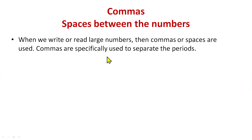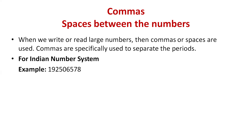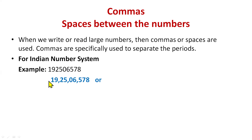We have already done the Indian place value chart. In the Indian number system, we need to insert commas: in the Indian system, three members are in the ones house, next two in thousands, next two in lakhs, and then crores. So first we put a comma after three digits, then after every two digits. In some books, spaces are used instead of commas. You can see: ones period, thousands period, lakhs period, and crores period.